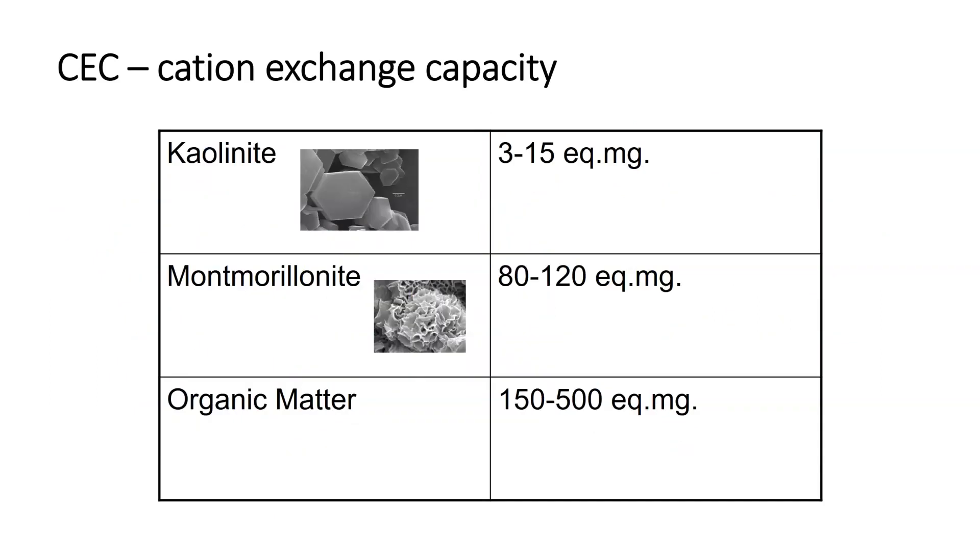When we look at clays and organic matter, kaolinite is considered to be a one-to-one lattice clay. It has got 3 to 15 milliequivalents per milligram. Montmorillonite is a two-to-one lattice clay. It's got 80 to 100 equivalent milligrams per material. Organic matter, you're looking at 150 to 500 equivalent milligrams. This is a measure of our cation exchange capacity.